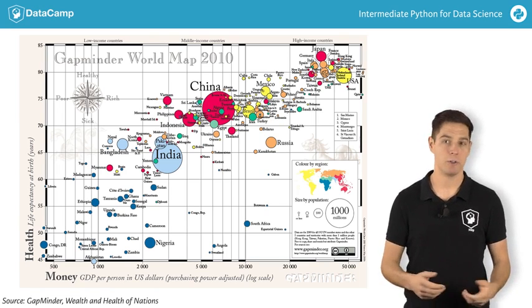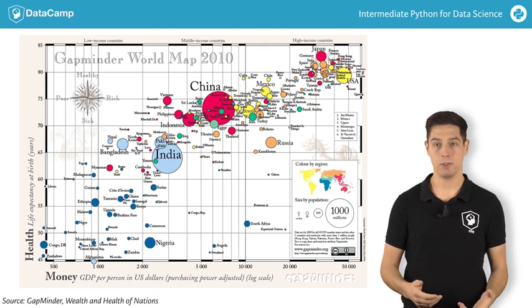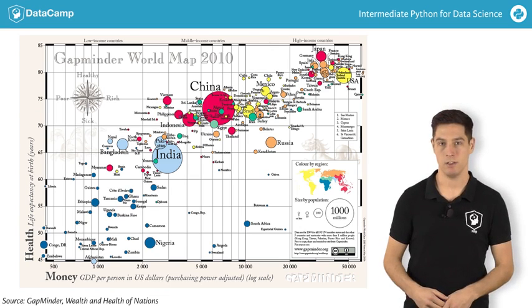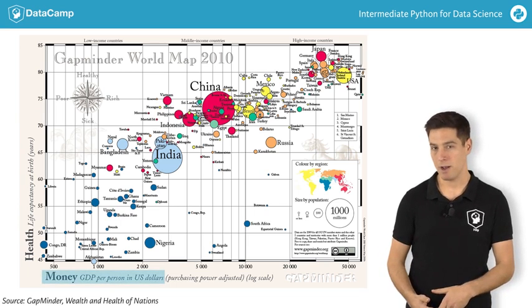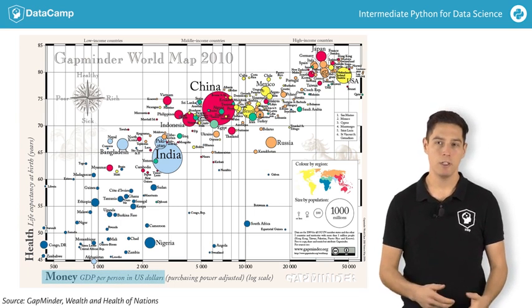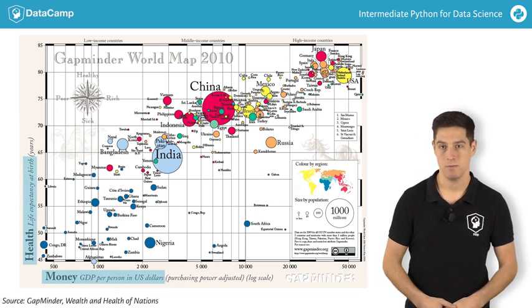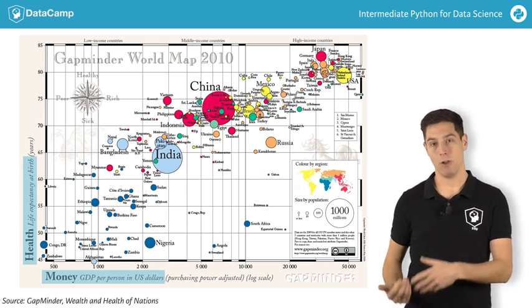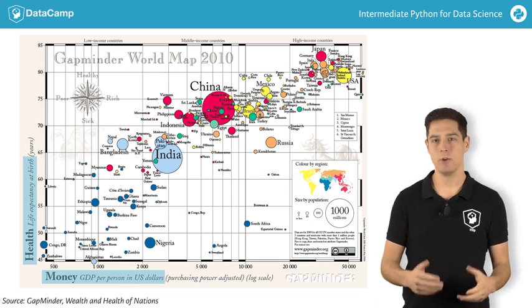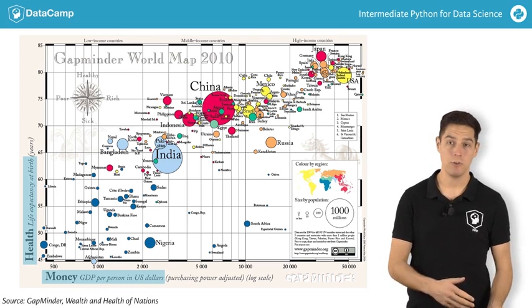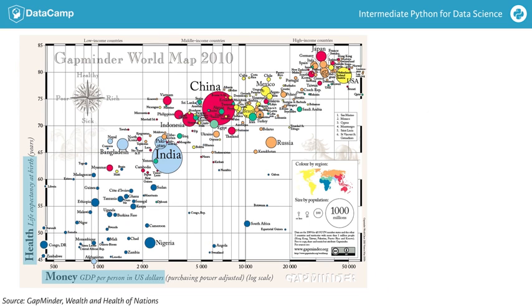The bigger the bubble, the bigger the country's population. So the two biggest bubbles here are China and India. There are two axes. The horizontal axis shows the GDP per capita in US dollars. The vertical axis shows life expectancy. We clearly see that people live longer in countries with a higher GDP per capita. Still, there is a huge difference in life expectancy between countries on the same income level.